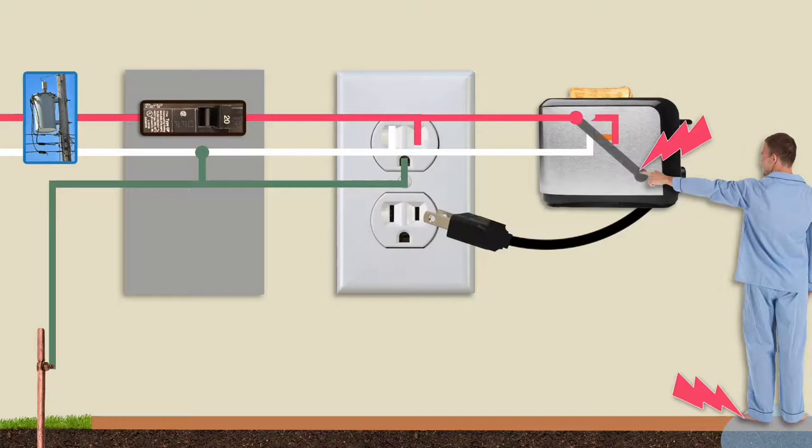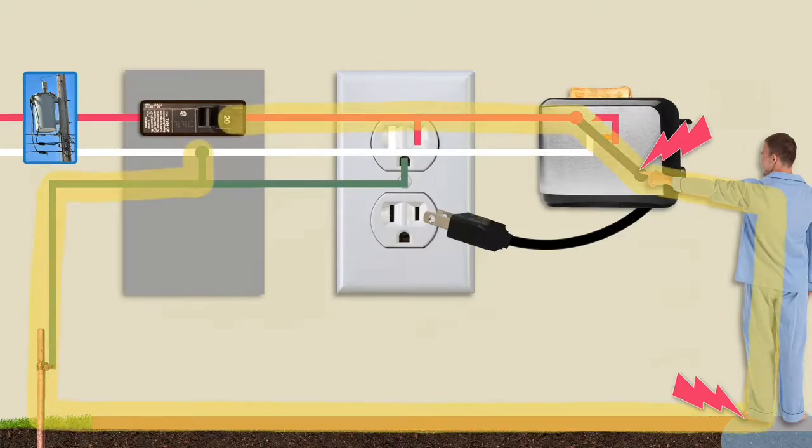That's because the person completes the connection between the hot and neutral line through the earth ground. And unfortunately, because the resistance of the earth path is so high, the circuit breaker is unlikely to trip. This is extremely dangerous because, as we've learned, when high voltage passes through a person's heart, it can stop beating.